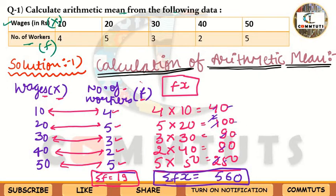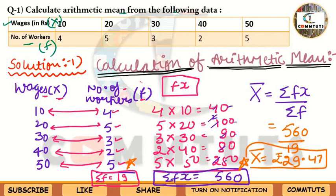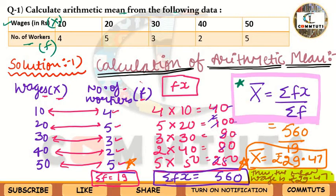Now apply the Direct Method formula: x̄ = ΣFX / ΣF. Here ΣFX = 560 and ΣF = 19. So 560 ÷ 19 = 29.47. Draw a line below and write: Thus the mean wage is ₹29.47. This is your Solution 1. This is the step-wise method you must use in your paper.